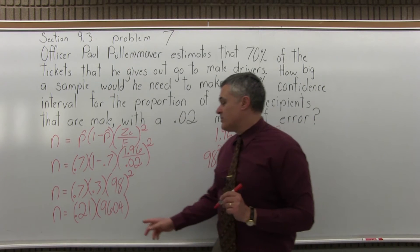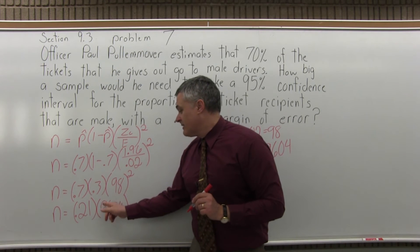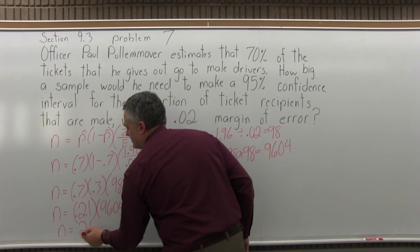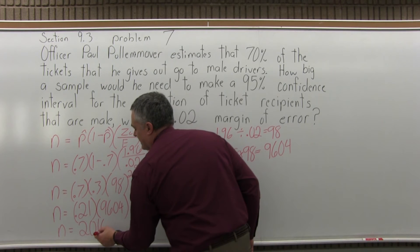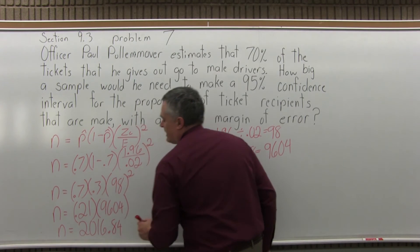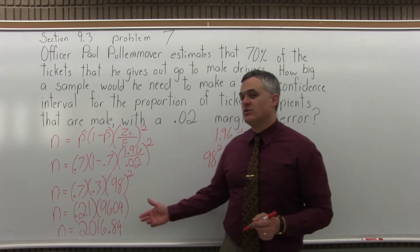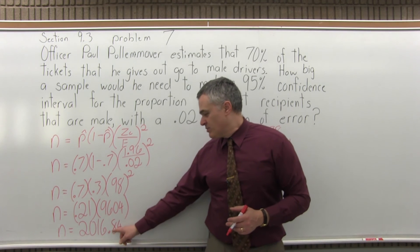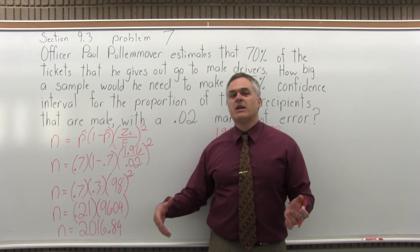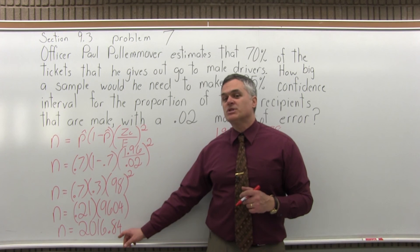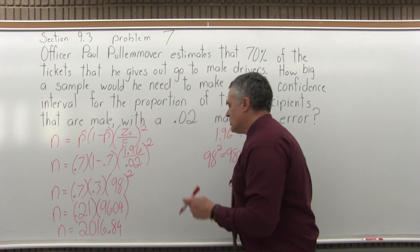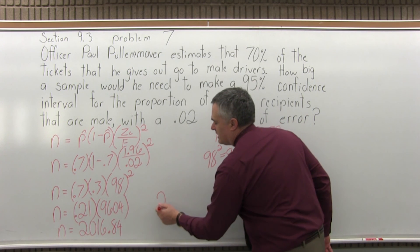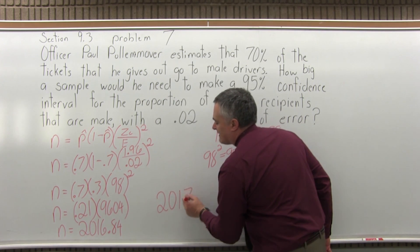To finish off the problem: .21 times 9,604 gives us n equals 2,016.84. The notes for this section say that when you determine a sample size and get a decimal result, always push it up to the next biggest whole number. The .84 would ordinarily round up anyway, but even if it were .48, you'd still push it up. So the size of the sample that Officer Paul Pullemover needs for his confidence interval would be 2,017 people.